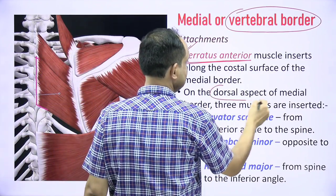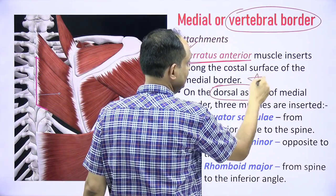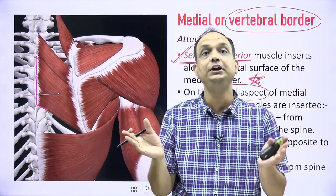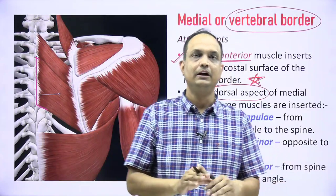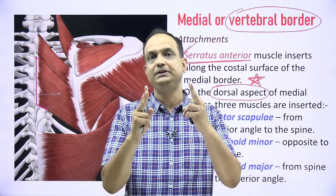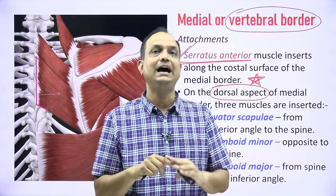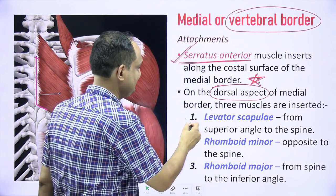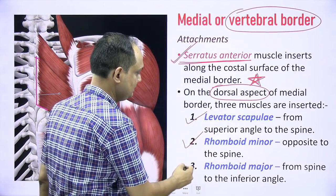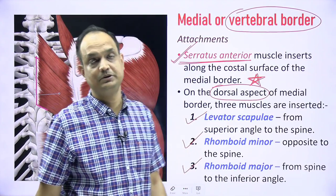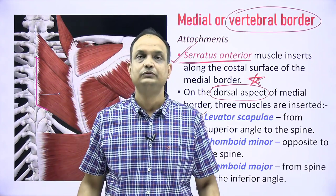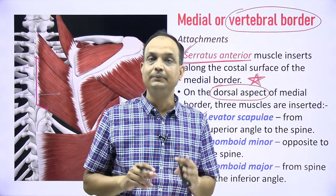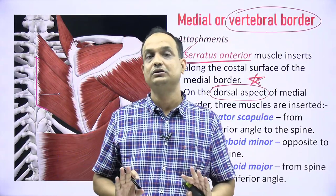The dorsal aspect of the medial border is also important. On the dorsal aspect, we have the muscles which lie deep to the trapezius. In dissection, when you cut the trapezius, you will find 3 muscles from above downward: levator scapulae, rhomboidus minor, and rhomboidus major. These 3 muscles are attached on the medial border on the dorsal aspect.